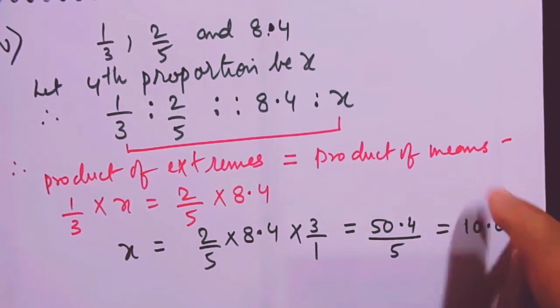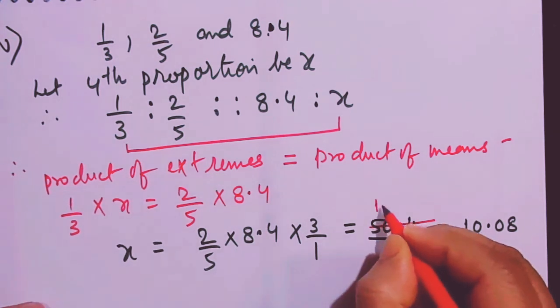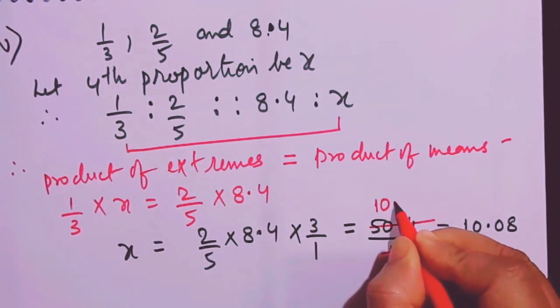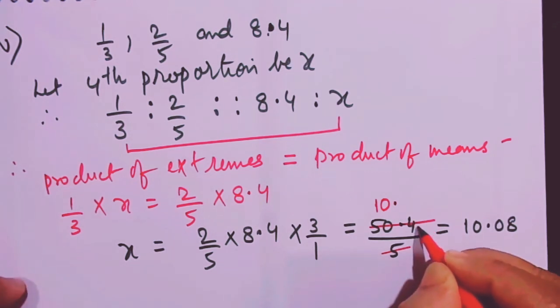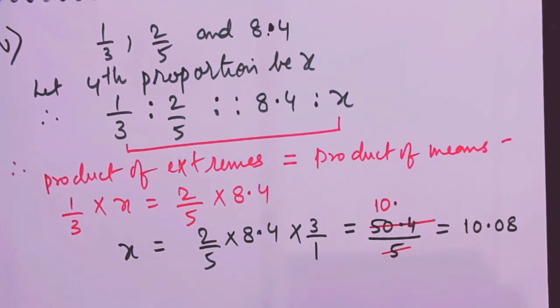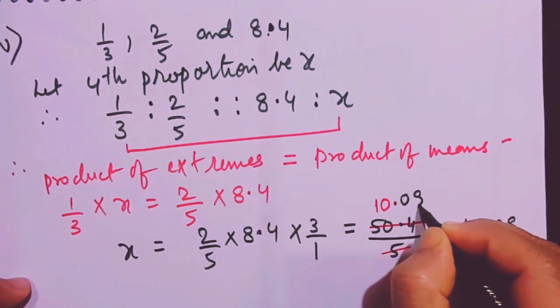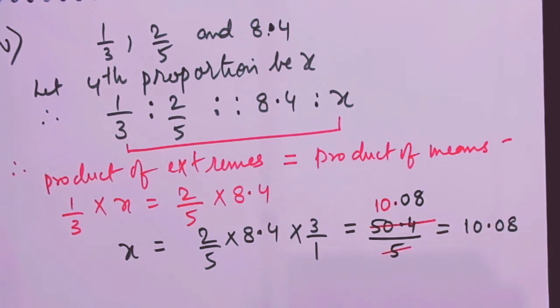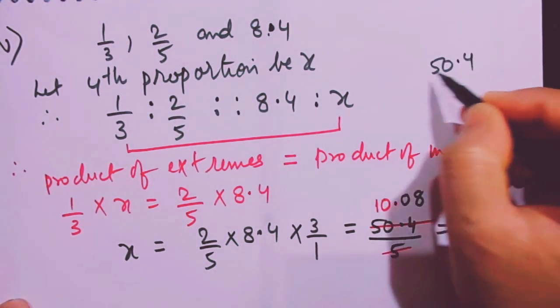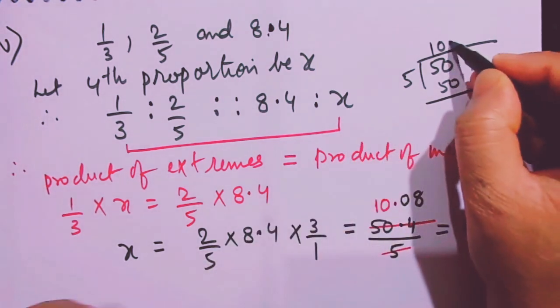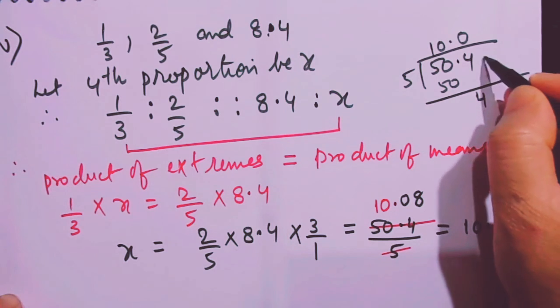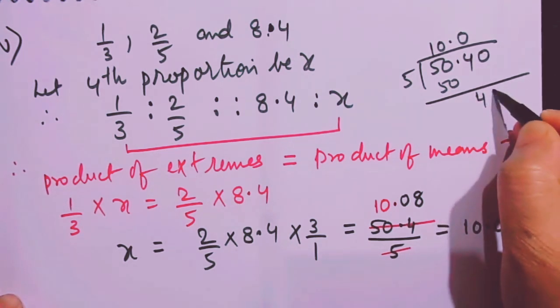Many students make mistakes here, so let me work through 50.4 divided by 5 carefully. 5 goes into 50 ten times, giving 50. The 4 comes down but won't divide by 5, so put a decimal and take one more zero: 40 divided by 5 is 8. Put a zero after the decimal, so the answer is 10.08. Do not make any mistakes here — be patient as this step is slightly different.